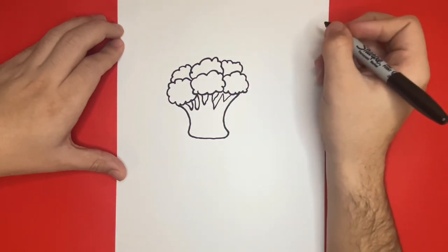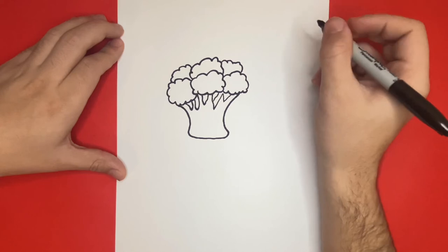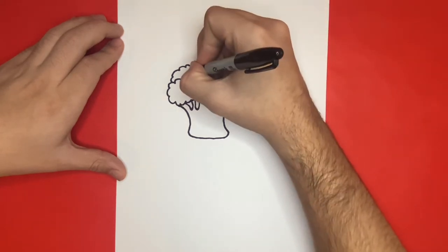Nice! Now for the last step before we color, we're just going to go all throughout our broccoli, through the top and bottom, and add in small lines that are curved and straight for detail.